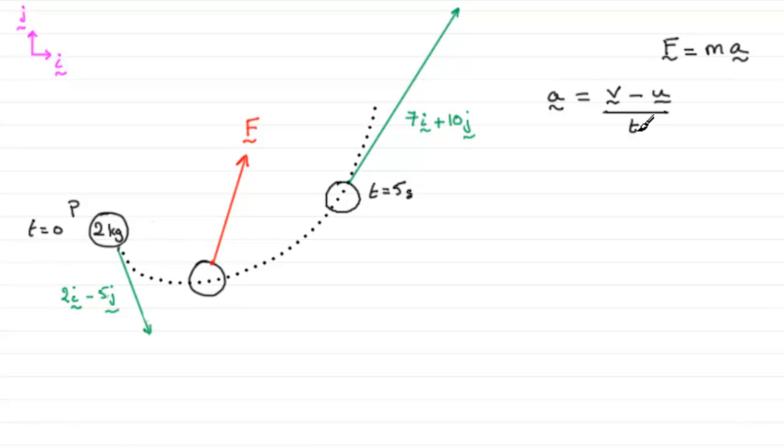Anyway, so we've got to get A. Well, we know the final velocity after 5 seconds is here, 7i plus 10j. So, we can fill this in as V as being 7i plus 10j. I could write that in brackets if I wanted to, but there's no need to.